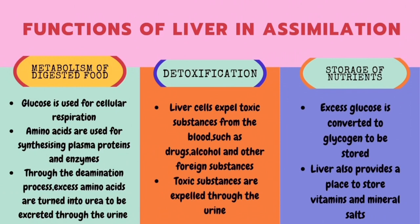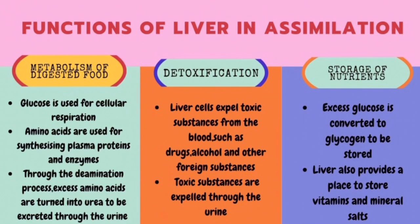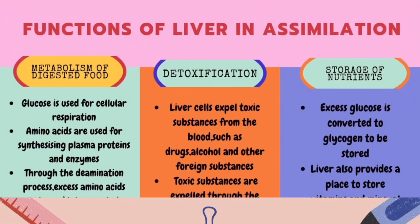Glucose is used for cellular respiration, while amino acids are used to synthesize plasma proteins and enzymes. Through the deamination process, excess amino acids are turned into urea to be excreted through the urine. The second function is detoxification: liver cells remove toxic substances from the blood such as drugs, alcohol, and other foreign substances, which are excreted through the urine. The third function is storage: excess glucose is converted to glycogen, and the liver also stores vitamins and mineral salts.